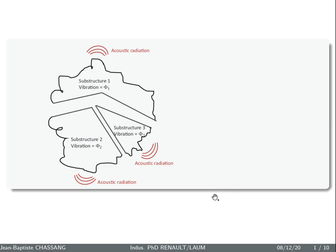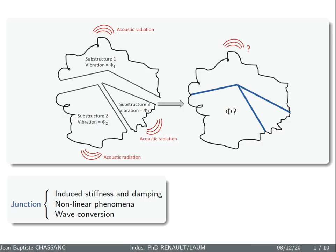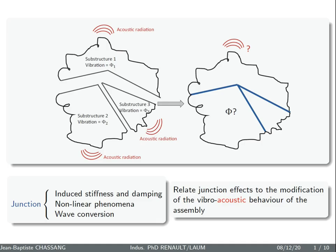Let's talk about the context. We start with three substructures which have some vibration behavior and acoustic radiation. We say that these substructures are correlated between FEM and experimental results, but when you assemble all of them you start to have some differentiation especially in medium and higher frequency.